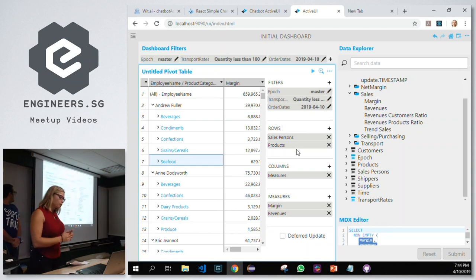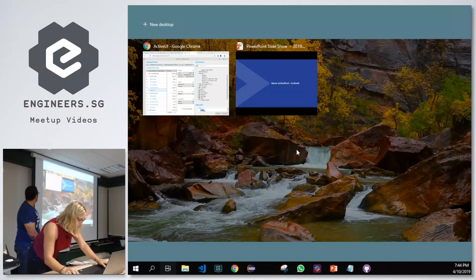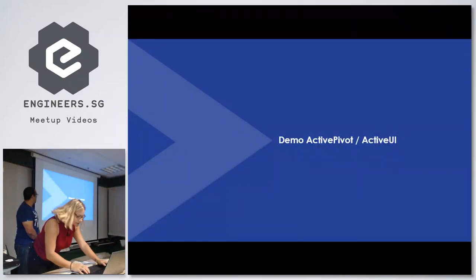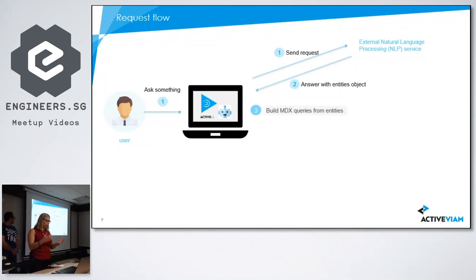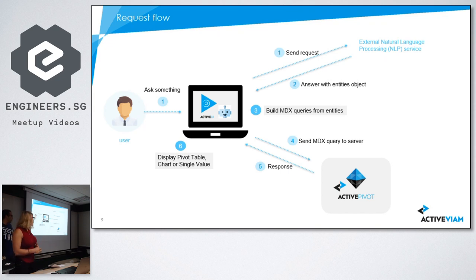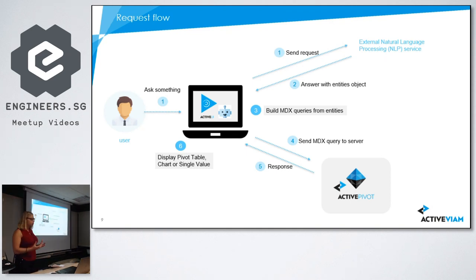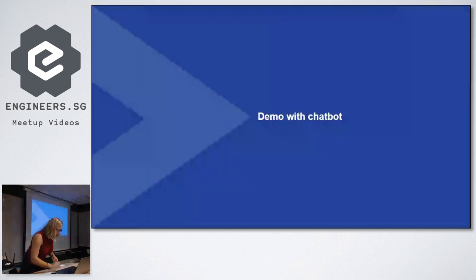Now I'm going to present the chatbot. Let me explain the flow. The user asks a question to the ActiveUI chatbot in the browser, which sends the request to an external NLP service — natural language processing. I then receive an entities object, and from that I build MDX queries to send to ActivePivot, get the response, and display something — either a simple sentence, a pivot table as Nida showed, or even a chart.